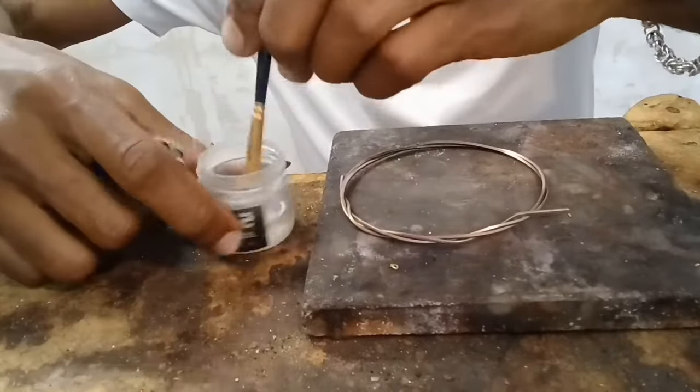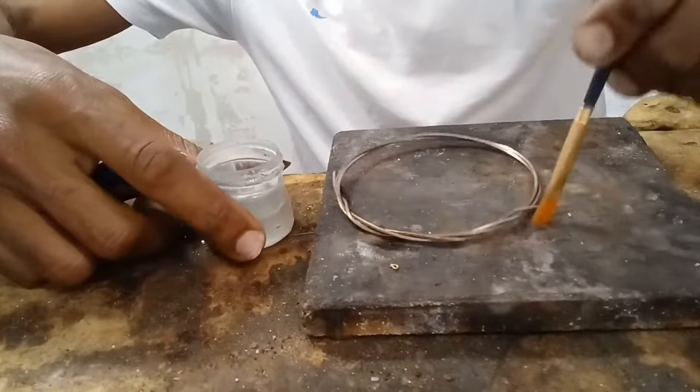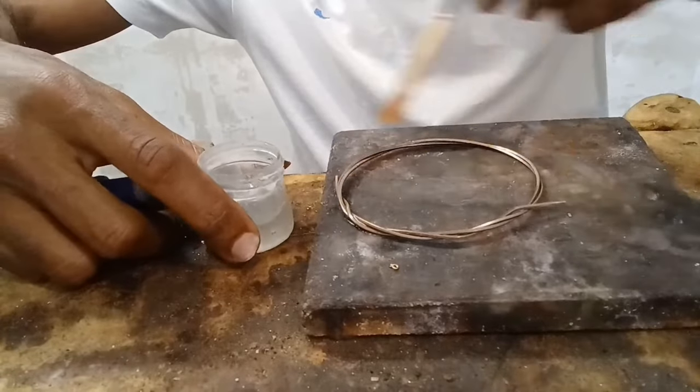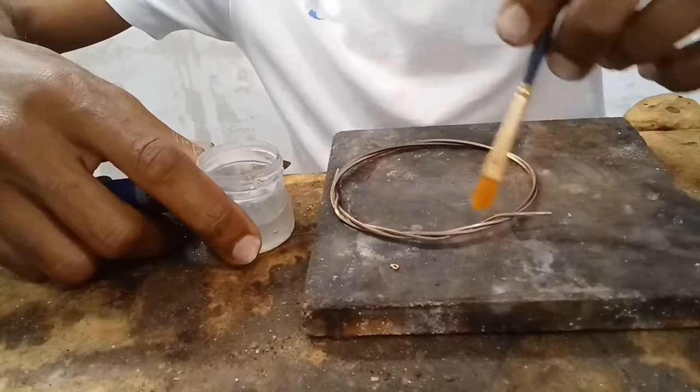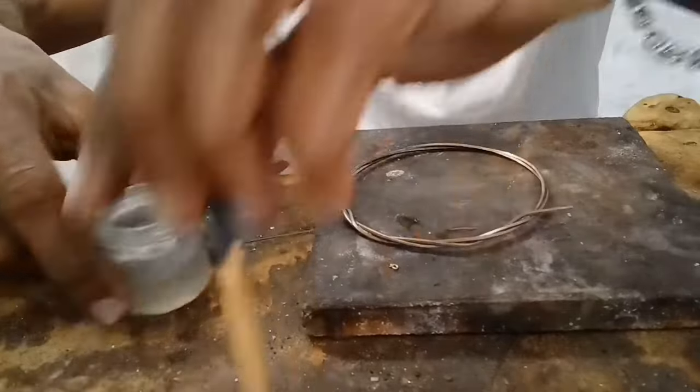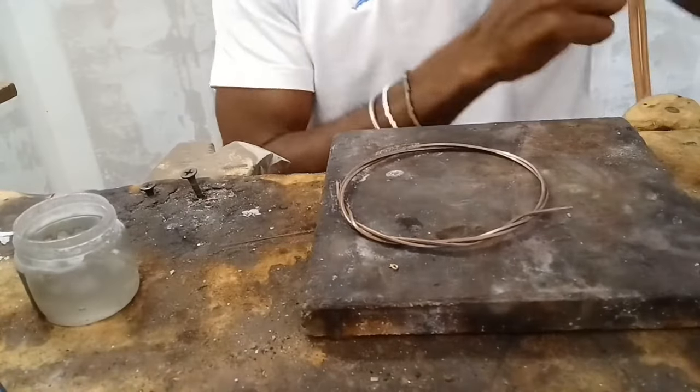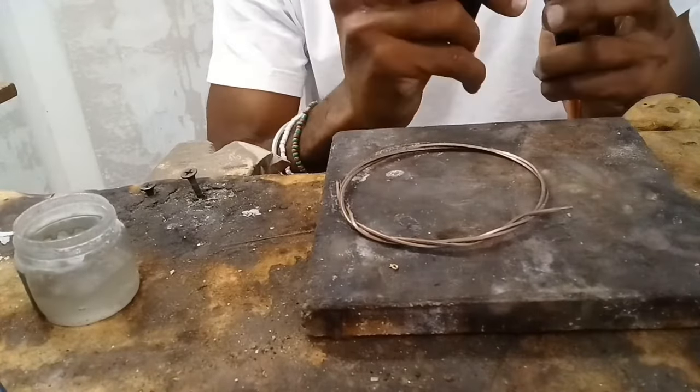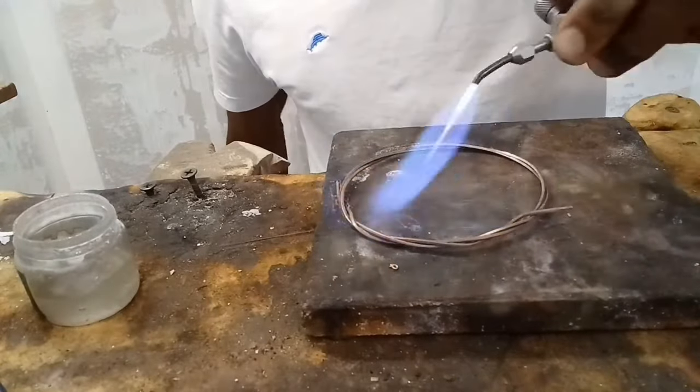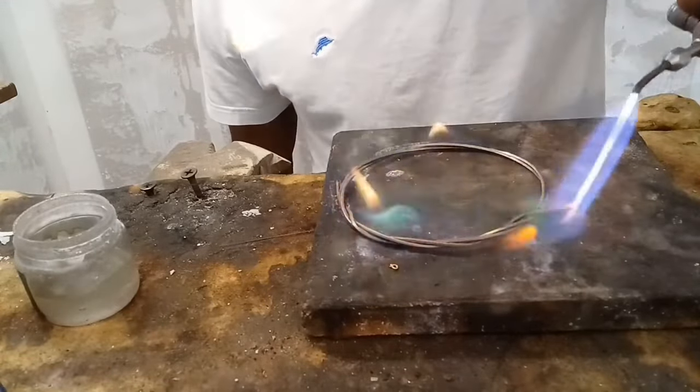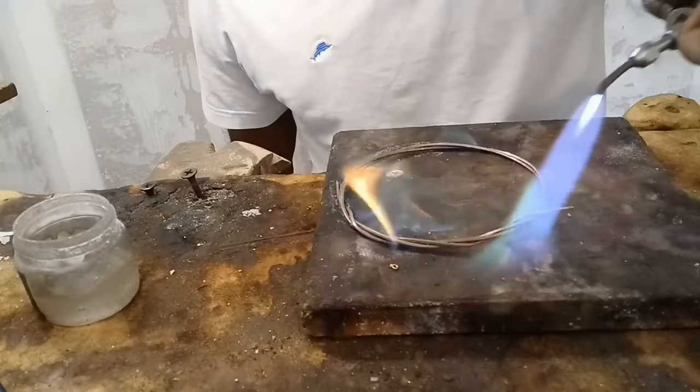At this stage, I'm applying boric acid and alcohol to the wire. This prevents oxidization and also fire scale. We've more prominently used this method during silver smithing, but we can also use it in gold. And here we are about to continue annealing the wire.